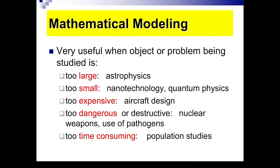We use computers instead to make the science about these rockets and aircrafts. Sometimes the problem is too dangerous or destructive when we work with nuclear weapons, when we study pathogens, when we study disease. And as I said, it could be time-consuming. For instance, population studies or geological studies require long periods of time.